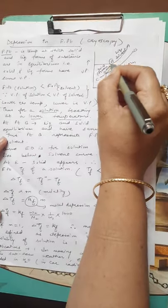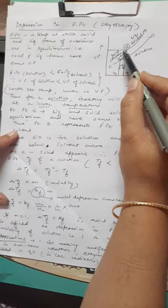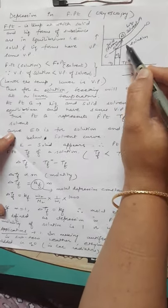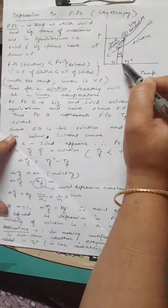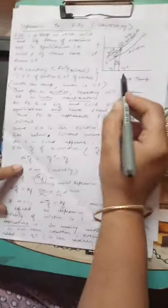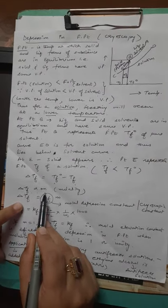Point B is representing where liquid and solid solvents are in equilibrium, and at that point both have same vapor pressure. Thus point B represents TF° of pure solvent. The difference, ΔTF, is equal to TF° minus TF, and ΔTF is directly proportional to molality.